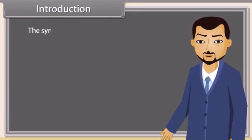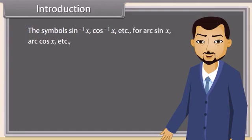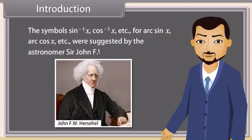The symbols sin⁻¹ x, cos⁻¹ x, etc., for arc sin x, arc cos x, etc., were suggested by the astronomer Sir John F. W. Herschel in 1813. Now, let's learn about inverse trigonometric functions.